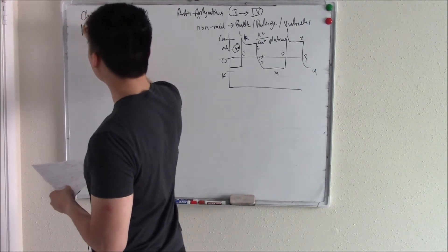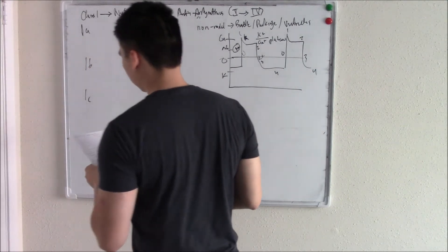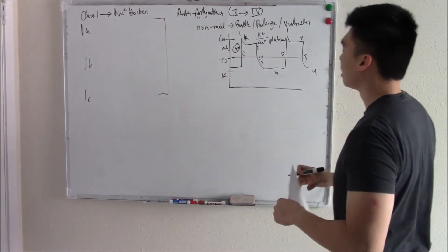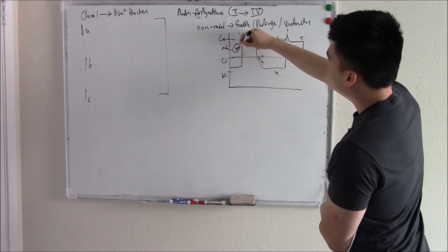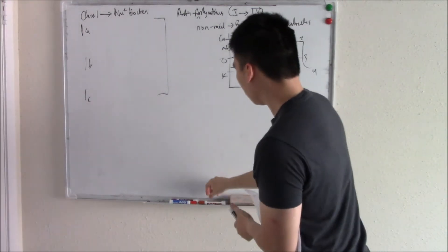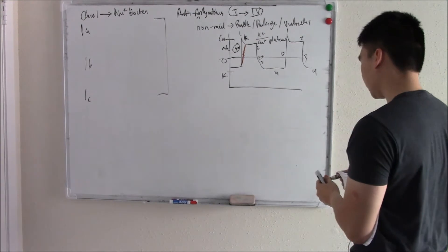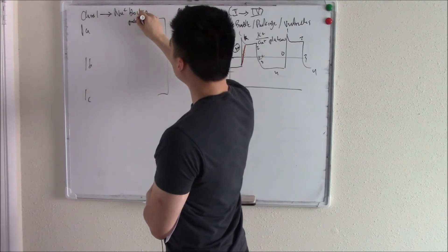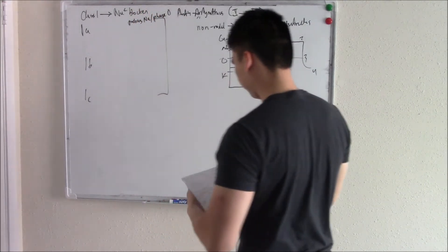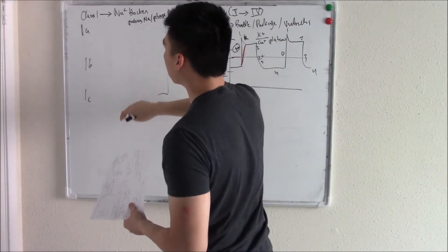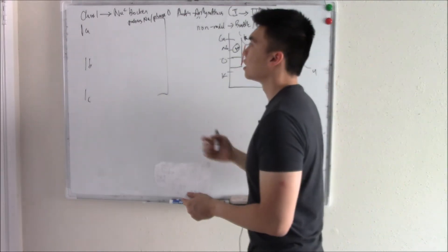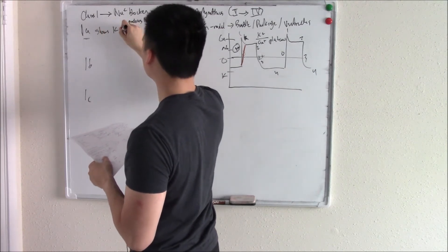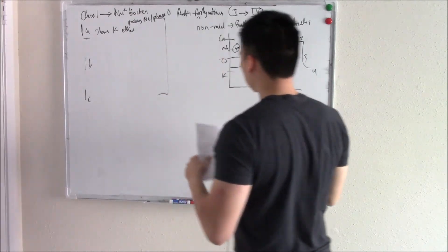You actually have three subclasses: 1A, 1B, and 1C. All of them work on sodium. When you block sodium, you prolong the depolarization — prolong phase zero. But we have three different classes because they also work on potassium to differing degrees. Class 1A slows potassium efflux — makes it more difficult for potassium to leave.